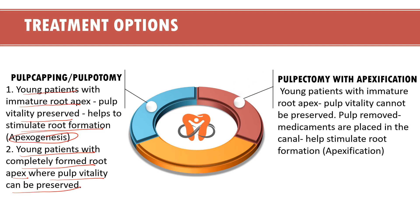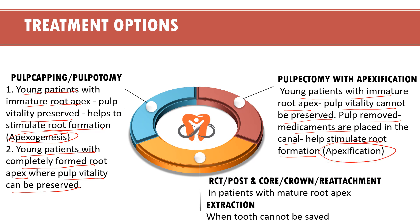Next is pulpectomy with apexification, done when we have a young patient with an immature root apex but pulp vitality cannot be preserved. The pulp is removed and medicaments are placed in the canal to stimulate root formation. For a patient with a mature root apex, we can perform root canal treatment followed by post and core, crown, or crown fragment reattachment. Finally, if the tooth cannot be saved, extraction is performed.